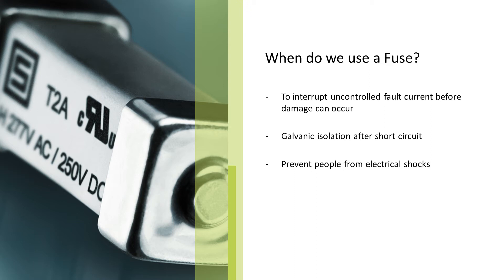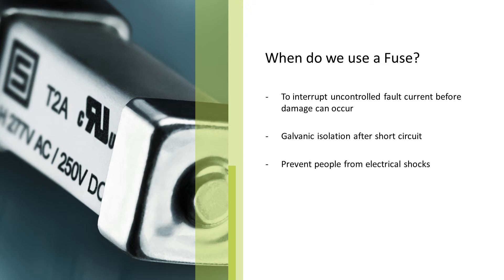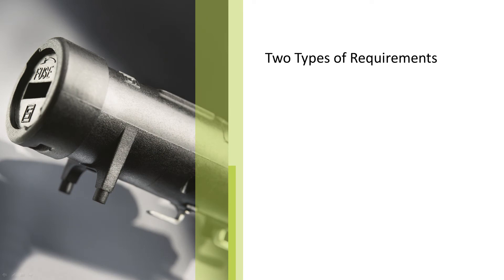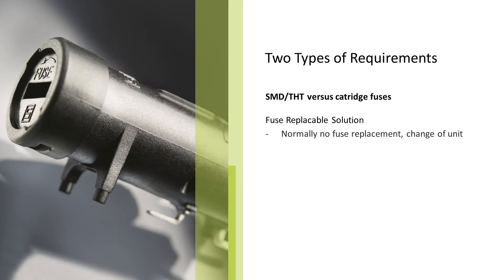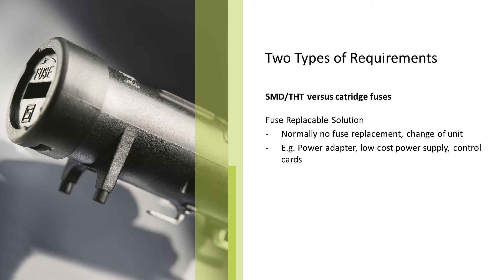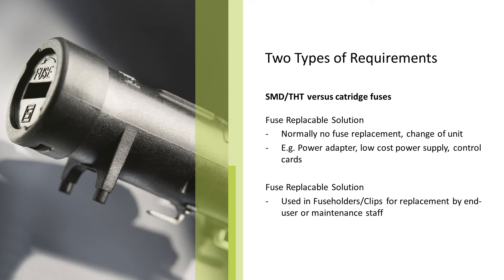The fuse is a fantastic protection device to protect people and equipment from short circuits. It's small, inexpensive, and very effective. On some applications, the whole power circuit has to be replaced after a short circuit has interrupted the fuse, and sometimes even the whole equipment has to be disposed. But that doesn't have to be — Schurter offers replaceable solutions where your maintenance staff or the end user can replace the fuse after a short circuit. It all depends on your needs.